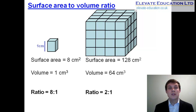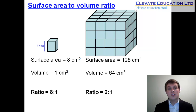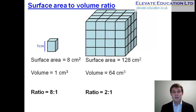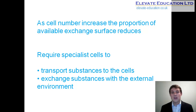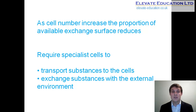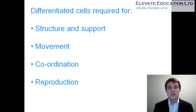Once we reach an organism of a certain size, some cells whose membranes aren't in contact with the outside world are unable to exchange substances directly with their environment. As multicellular organisms become larger, they require specialized cells that can exchange substances efficiently with their external environment as their surface area to volume ratio decreases, and also transport substances from areas in contact with the environment to cells that are not. There is also a need to develop specialized cells for structure and support, movement, coordination, and reproduction.